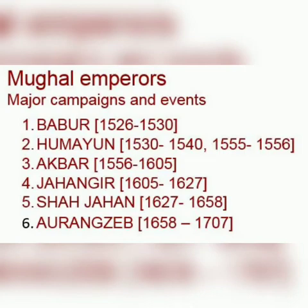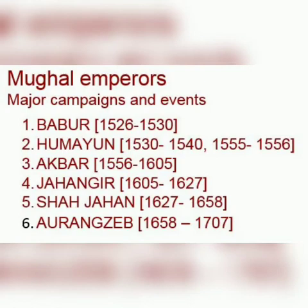Shahjahan (1627–1658): Mughal campaigns continued in the Deccan under Shahjahan. The Afghan noble Khan Jahan Lodi rebelled and was defeated. Campaigns were launched against Ahmadnagar. The Bundelas were defeated and Orchha seized. In the northwest, the campaign to seize Balkh from the Uzbeks was unsuccessful, and Kandahar was lost to the Safavids. In 1632, Ahmadnagar was finally annexed and Bijapur was forced to sue for peace.